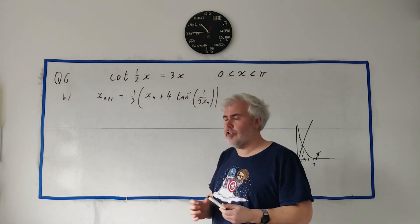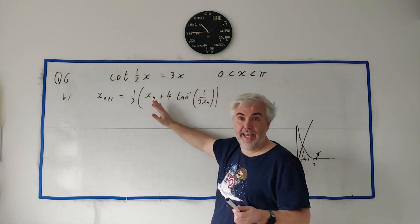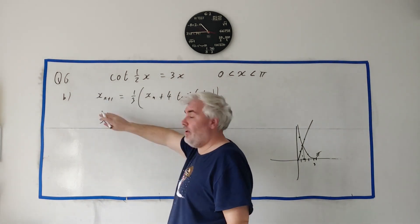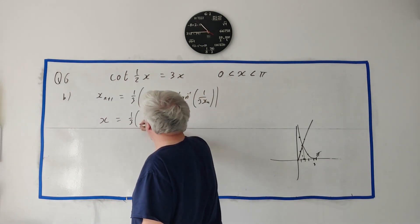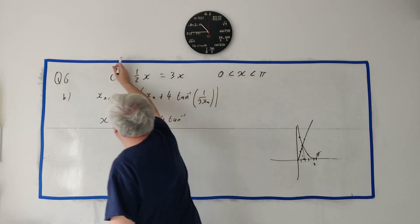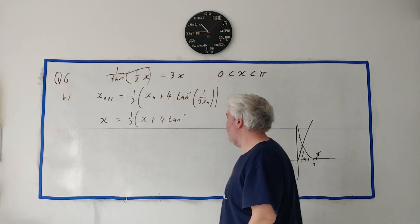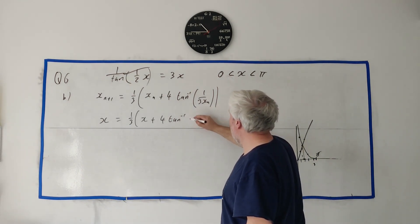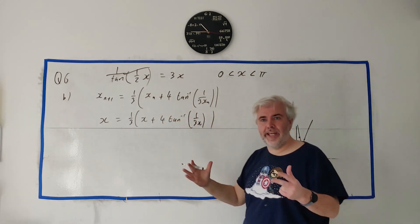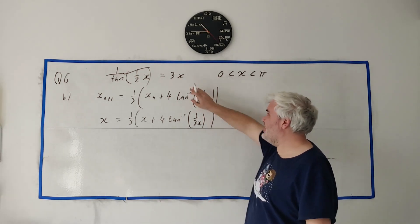If it converges, that means at some point x_{n+1} becomes the same as x_n — they become the same number. So I just write this all out again but with x instead of x_{n+1}: x equals 1 over (3x + 4) tan⁻¹(1 over 3x). Notice we're using tan instead of cotan. All I need to do is show that this is the same as the original equation.